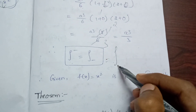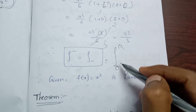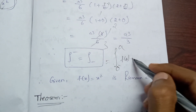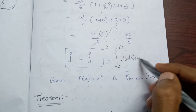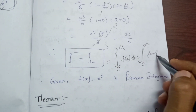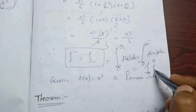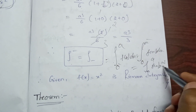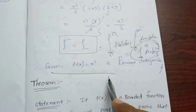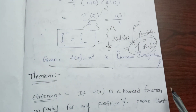Therefore, since the limit of both the lower and upper Riemann sums equals a³/3, we conclude that the Riemann integral from 0 to a of f(x) dx equals a³/3. Hence, the given function f(x) = x² is Riemann integrable on [0, a] and the integral equals a³/3.